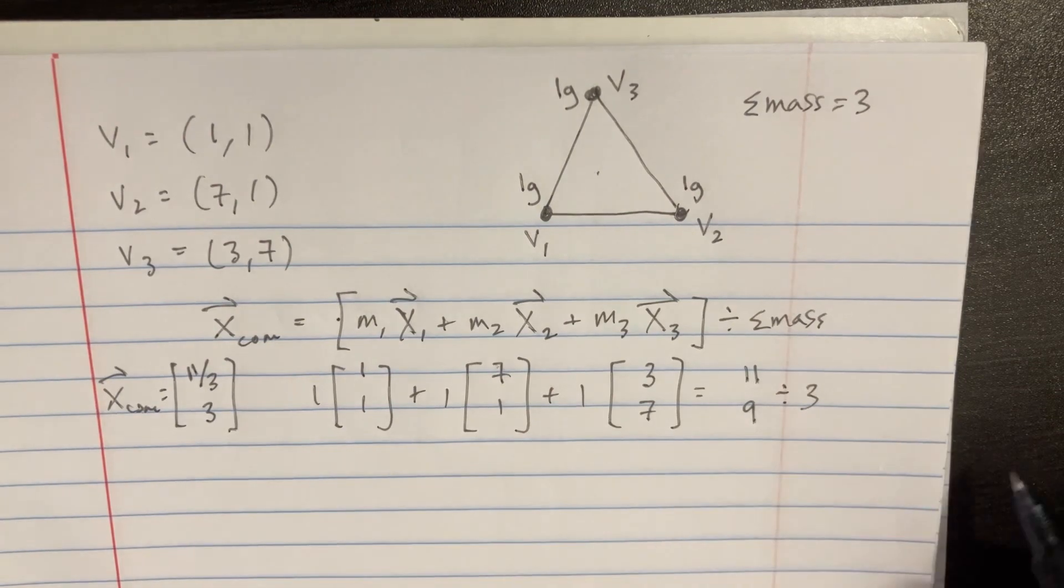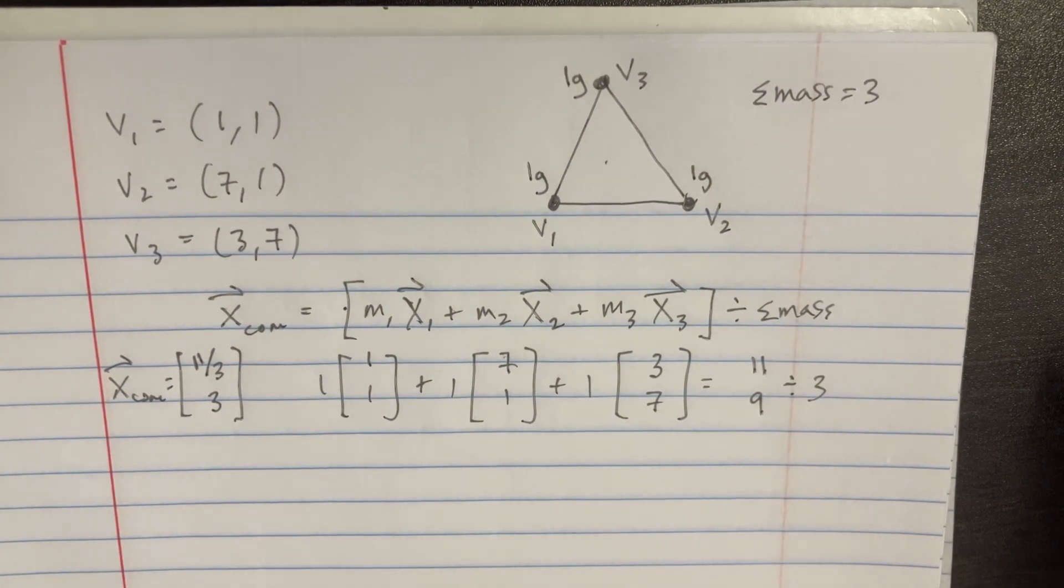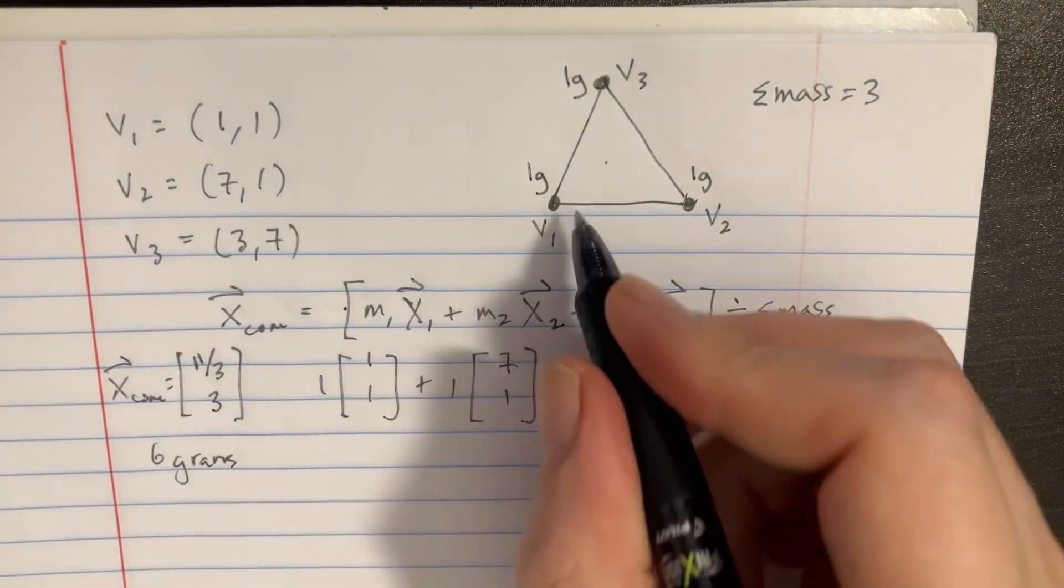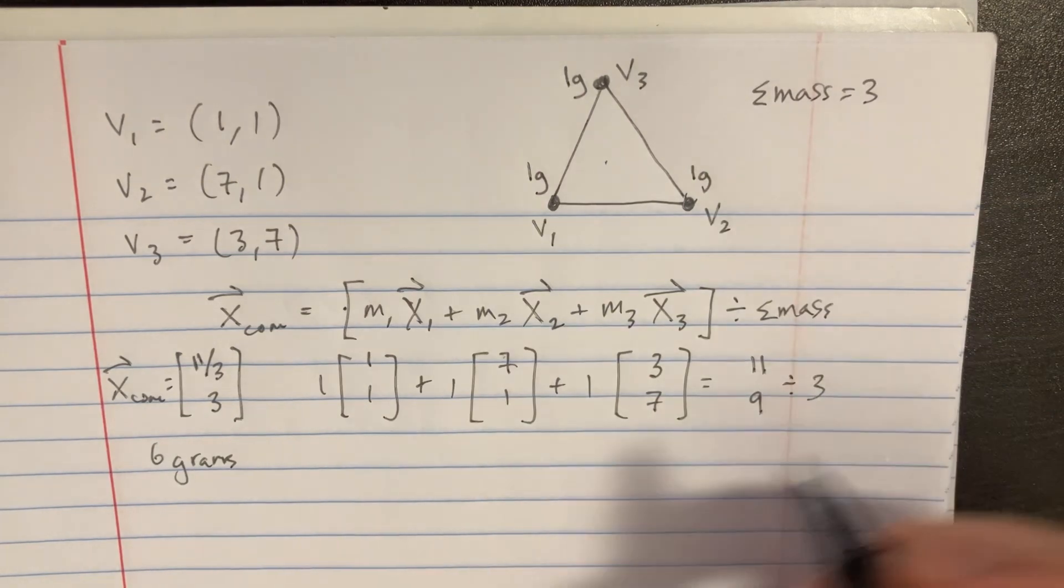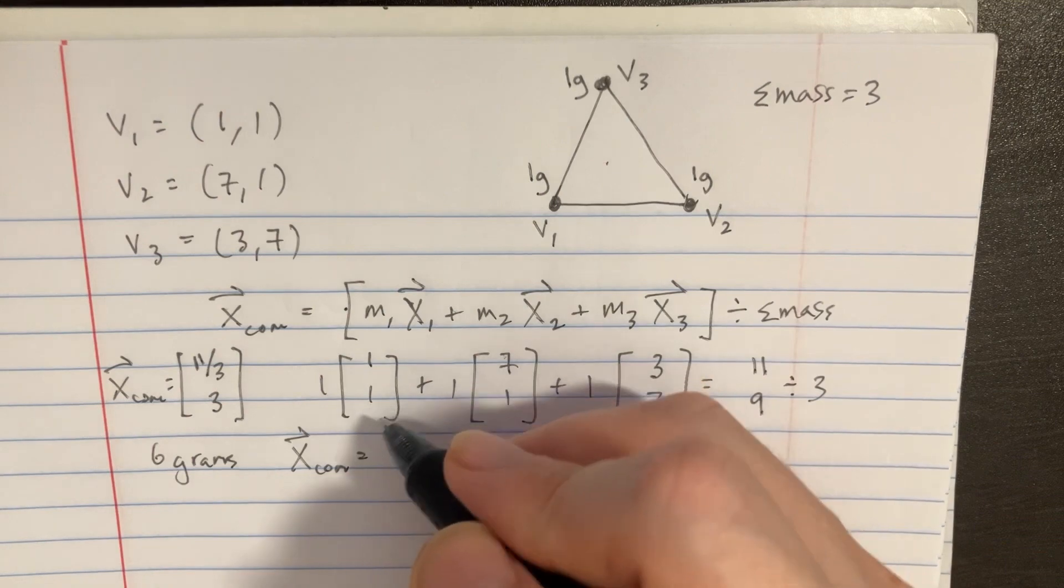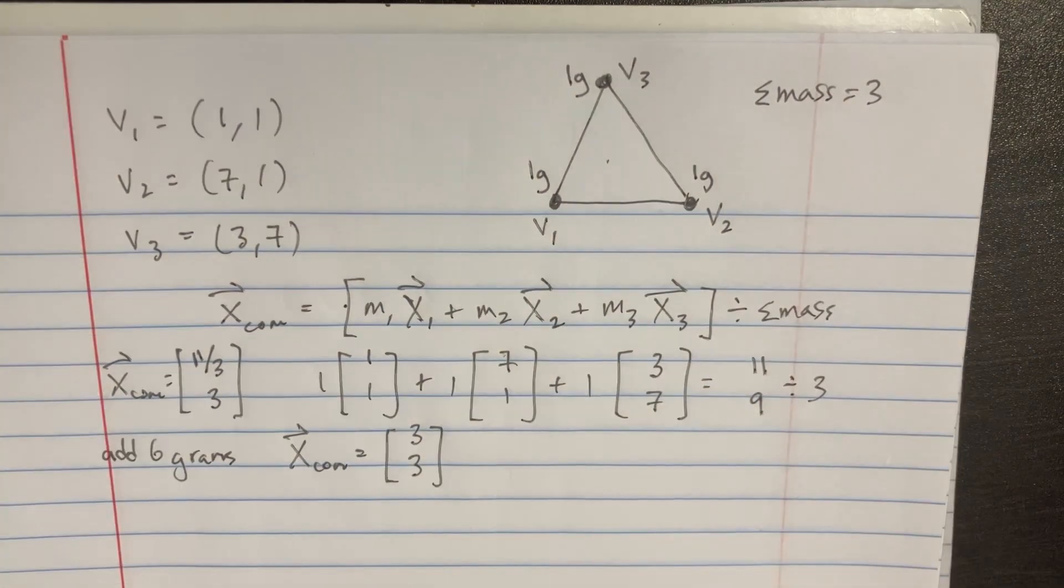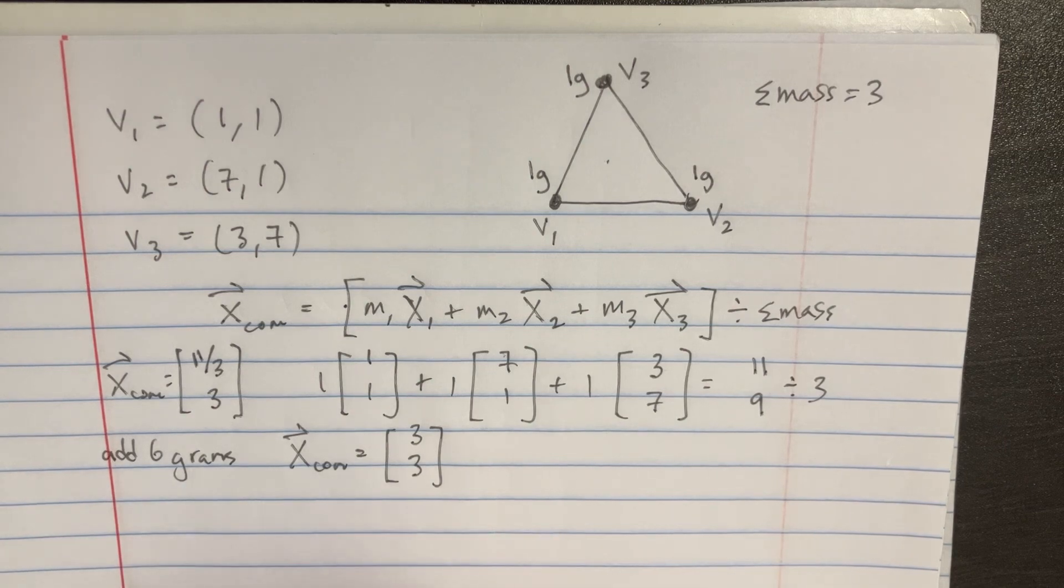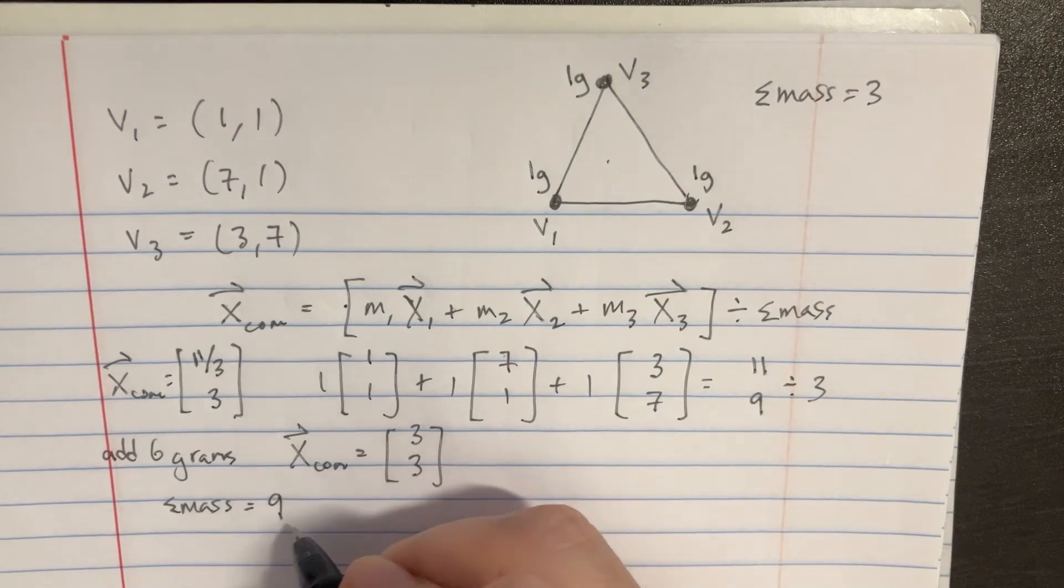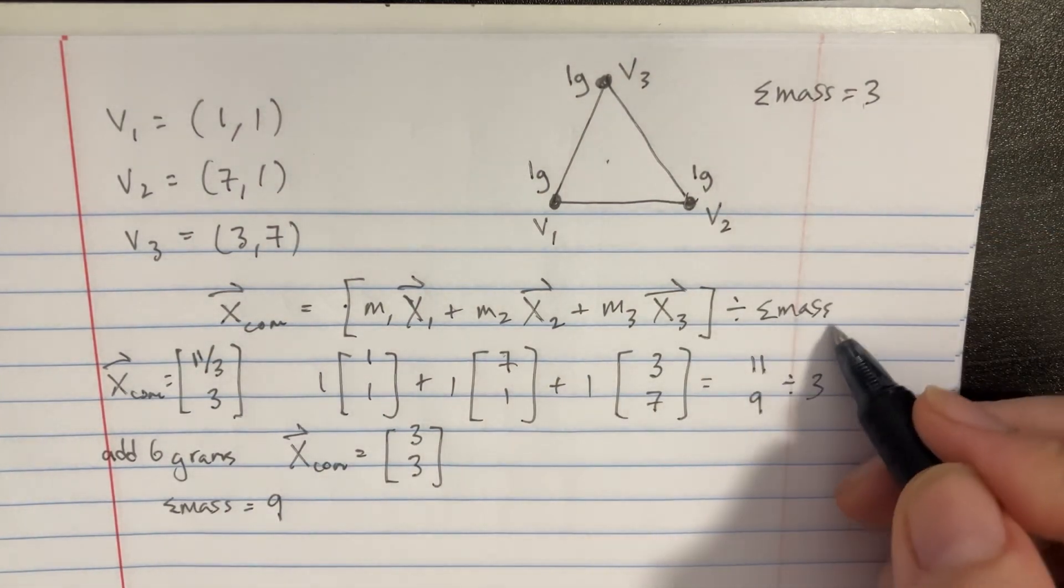So that's the position for the original triangle. However, in the second part, we're asked to distribute an extra 6 grams throughout this thing in order to make the x_com of the final triangle is (3,3). So if we were going to add 6 grams, we would know that the total mass in the end would just be 9 grams, right? Because we have 3 plus 6 gives us 9.